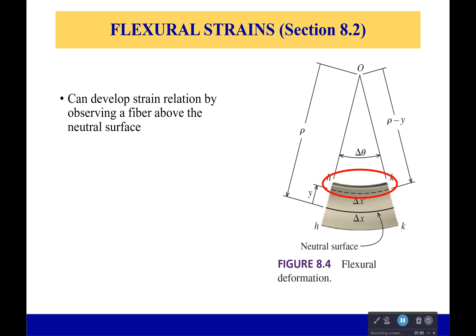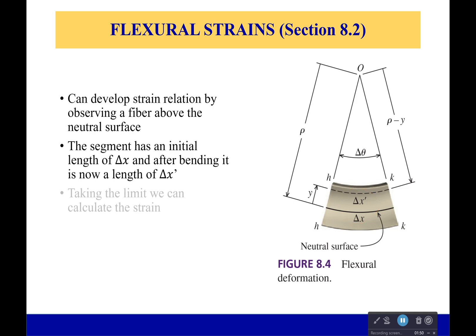Let's use the center of curvature and this radius of curvature to determine a strain relation by looking at this fiber above the neutral surface. So the segment has an initial length of ΔX, and after bending it now has the length of ΔX prime. Taking the limit, we can then calculate the strain—there we go, beautiful, it's done. However, this is not useful at all, so we need to put it in terms of something we can actually look at.